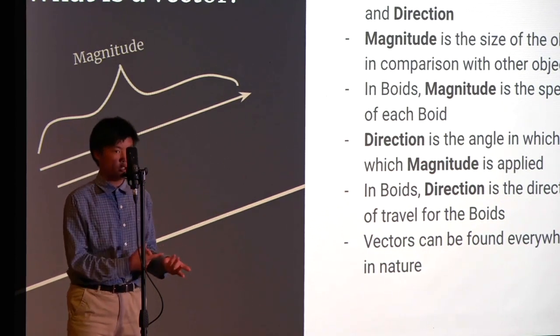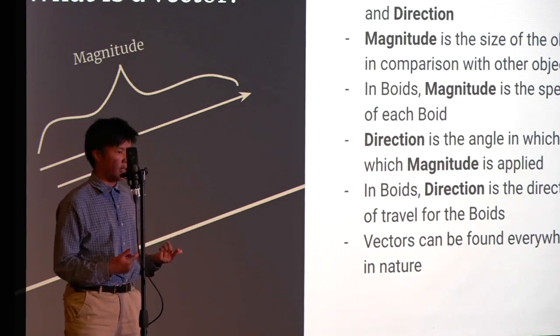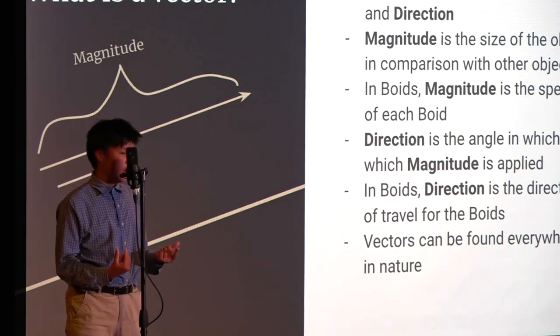Direction is just the direction of this object, and the object can be anything. It can be a particle, it can be a shape. The magnitude can be anything applied in that direction, so it can be the speed of the object, it can be the strength, it can be the length.